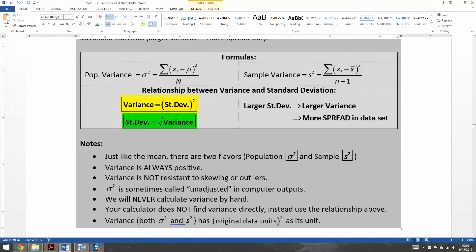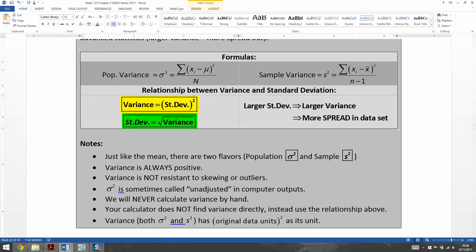Sigma squared, the population variance, is called unadjusted in computer outputs. So when you see those, the word unadjusted, that means that it's the population standard deviation, or population variance, excuse me, rather than the sample variance.